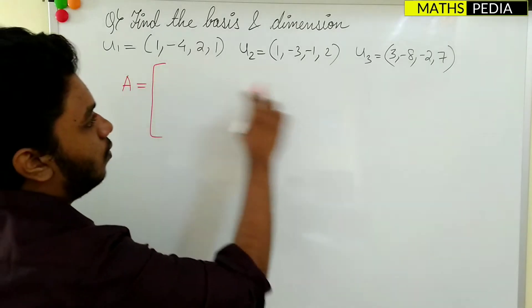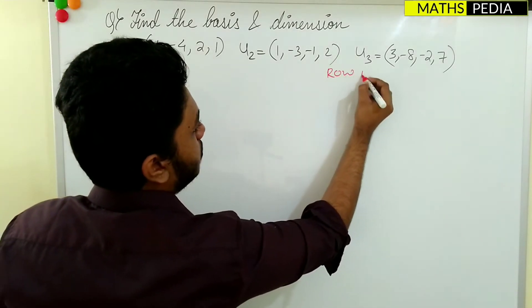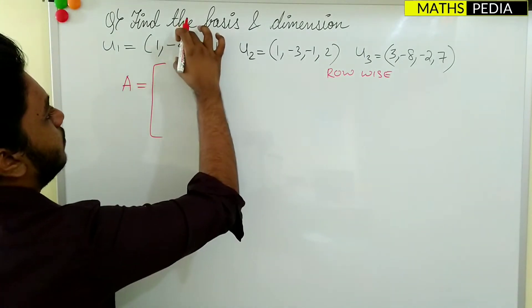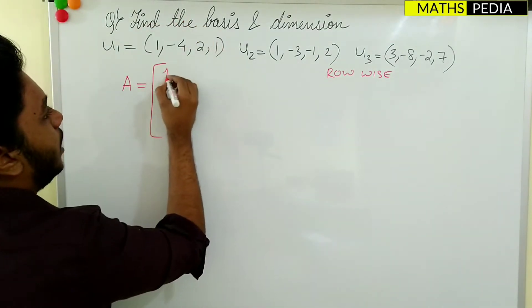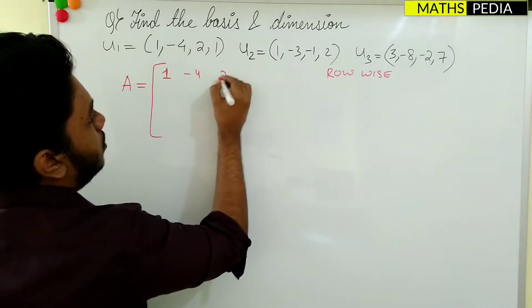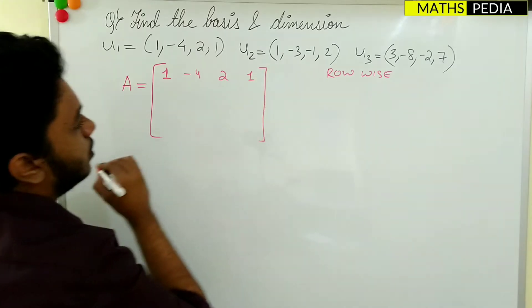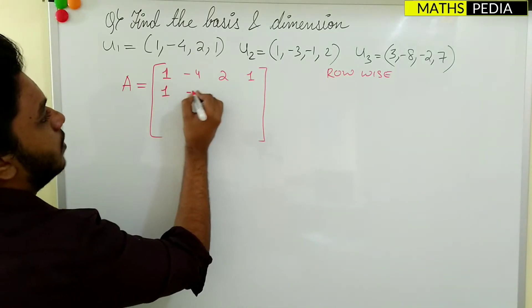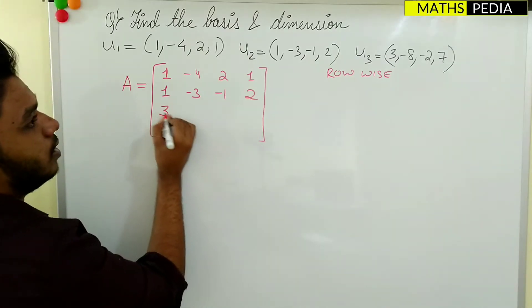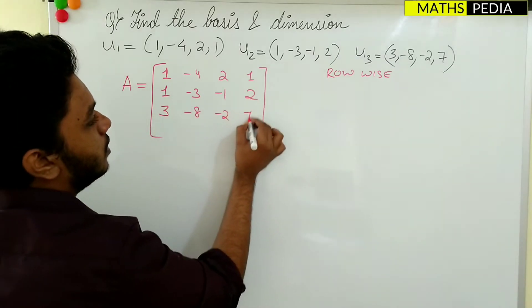Always remember to write the vectors row-wise. That means you write each given vector as a row: the first row is 1, -4, 2, 1; the second row is 1, -3, -1, 2; and the third row is 3, -8, -2, 7.